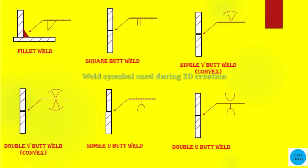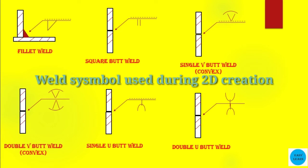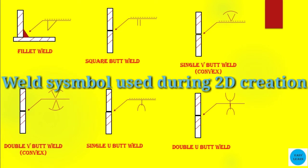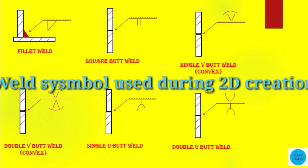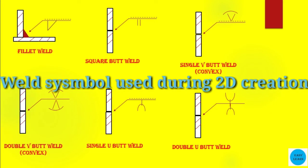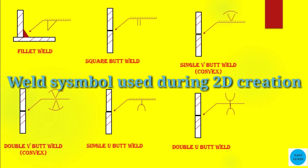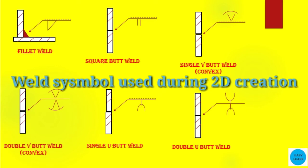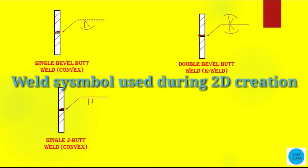What are the various types of weld symbols we can use during making a 2D drawing or drafting? Mostly we use: fillet weld, square butt weld, single V-butt weld, double V-butt weld, single U-butt weld, double U-butt weld, single J-butt weld, double J-butt weld, etc.